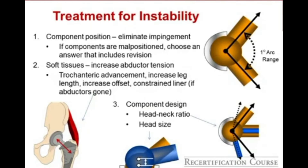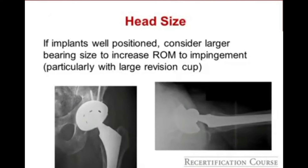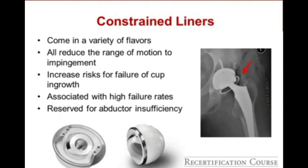Treatment for instability involves identifying correctable causes — malpositioned components and impingement should be corrected. For soft tissue problems, increasing abductor tension can be done through trochanteric advancement, increasing leg length, or increasing offset. A constrained liner is used for truly deficient abductors. Constrained liners hold onto the femoral head to prevent dislocation but reduce range of motion to impingement — they should not be used with malpositioned implants and have been associated with high failure rates.